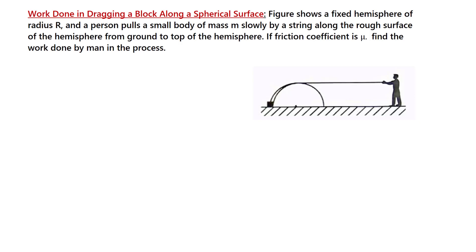Hello friends. This problem is about work done in dragging a block along a spherical surface. The figure shows a fixed hemisphere of radius R, and a person pulls a small object of mass m slowly by a string along the rough surface of the hemisphere, from ground to the top. If the friction coefficient is mu, we have to find the work done by the man in this process.